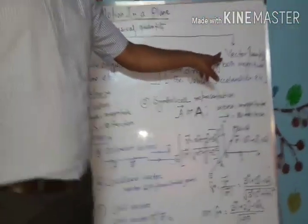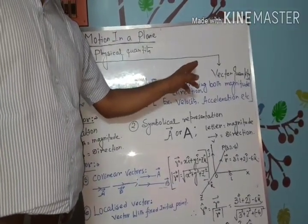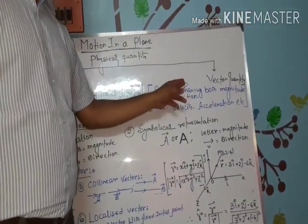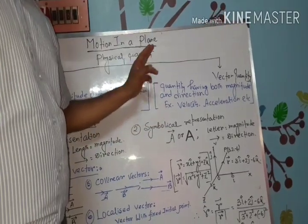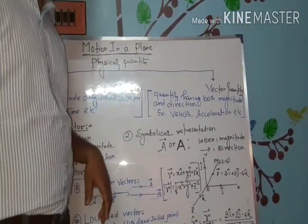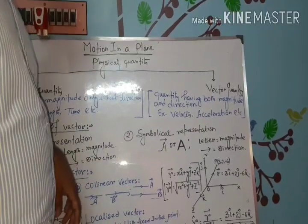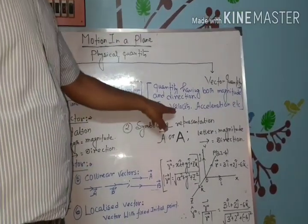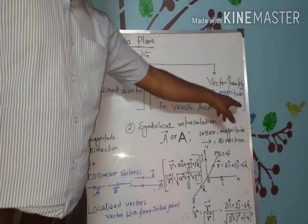Number 2: Vector Quantity, which has both Magnitude as well as Direction, and obeys the Vector Addition Laws like the Triangle Law, Parallelogram Law, and Polygon Law. For example, Velocity, Acceleration, etc.